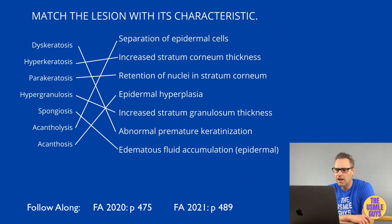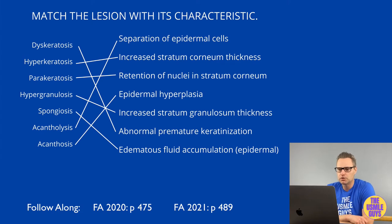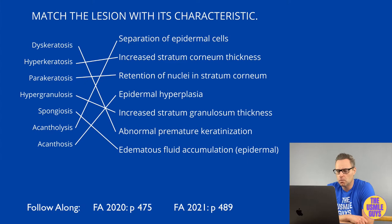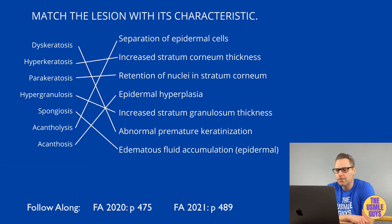How did you do? Hopefully well. Let's take a look at our microscopic terms, starting with hyperkeratosis. Hyperkeratosis occurs when we've got increased thickness of the stratum corneum — think about psoriasis. The way they're going to ask these questions is by explaining the gross finding, then describing what was seen microscopically. If you know both the macroscopic and microscopic terms, it's easy to tie them together.